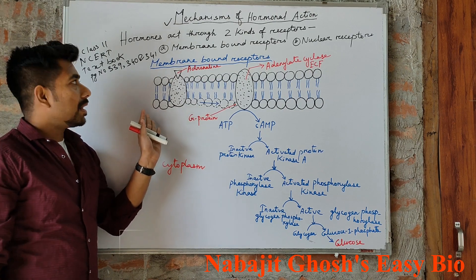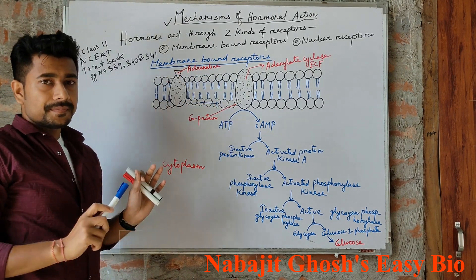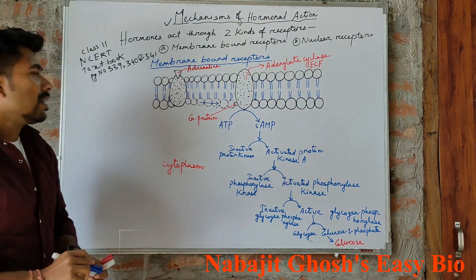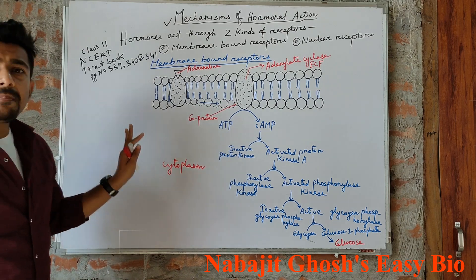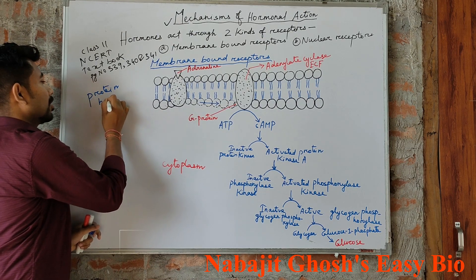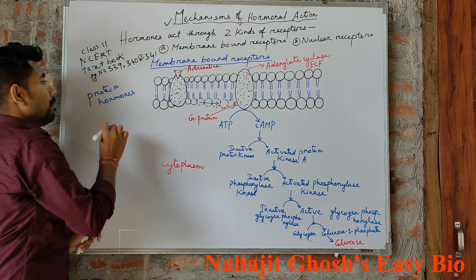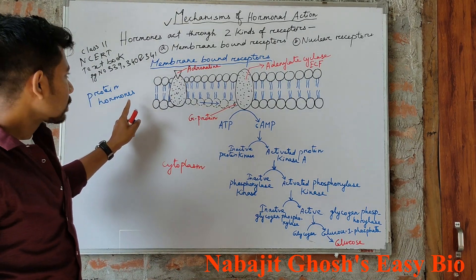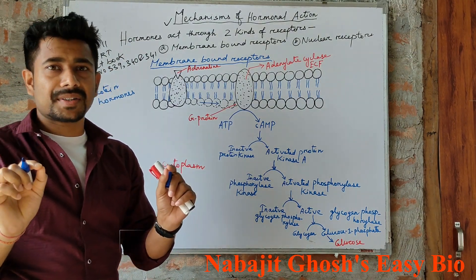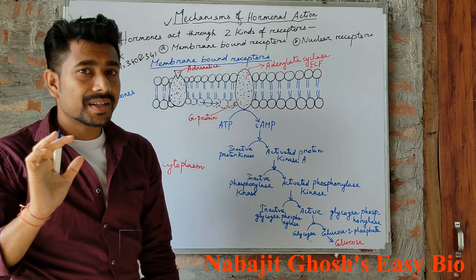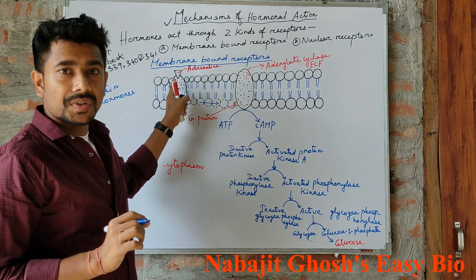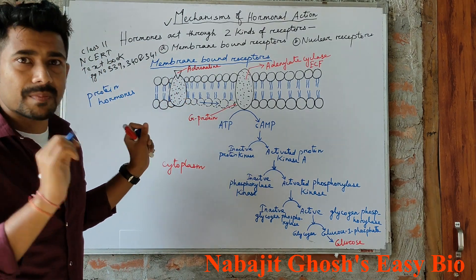I am going to discuss about the membrane bound receptors. First of all, many proteinaceous hormones and amino acid derivatives are too large and cannot enter through the cell membrane. That is why they bind with the receptors of the cell membrane, that is, the plasma membrane.